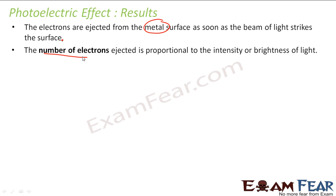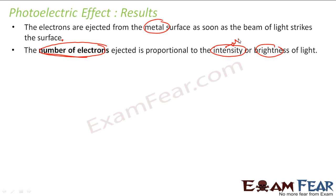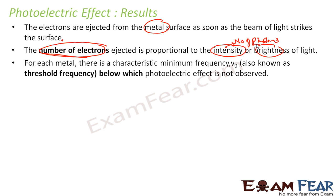The number of electrons ejected is proportional to the intensity of the light. The number of electrons that comes out is proportional to intensity, which is nothing but the number of photons. The more photons you have, the more bright the light is.